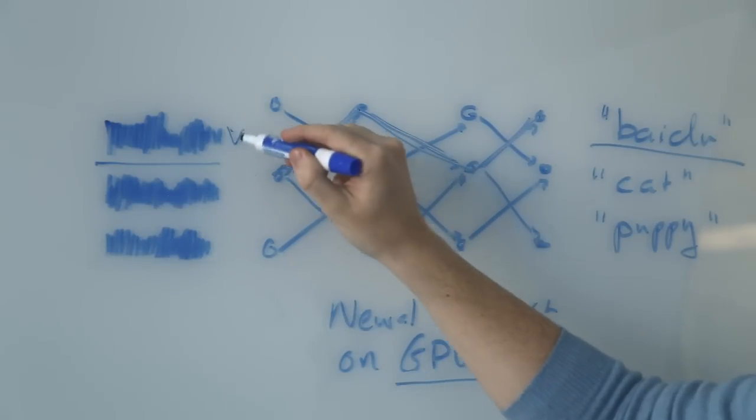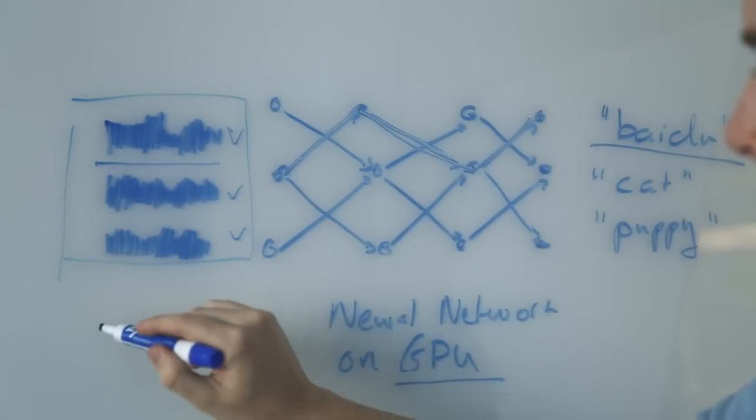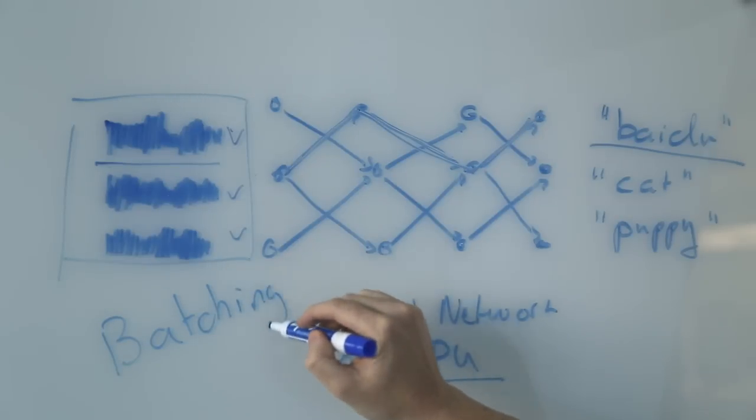Fortunately, neural network models tend to be the same for different users and can therefore be shared between multiple requests. This process is known as batching, which is common at training time but less common in production.